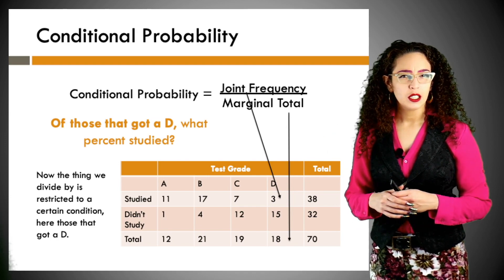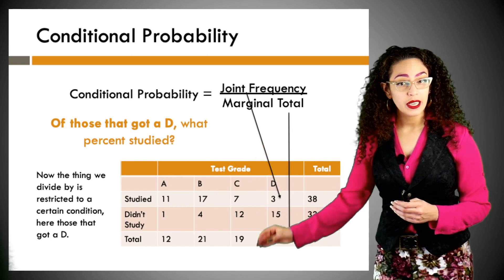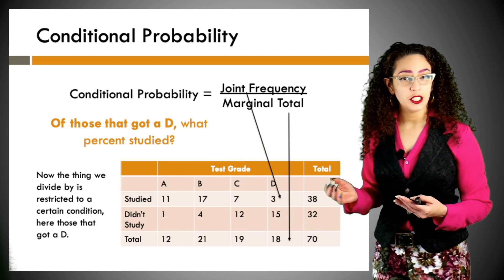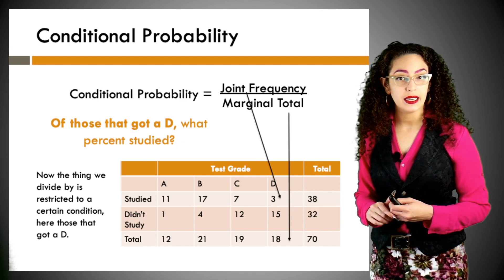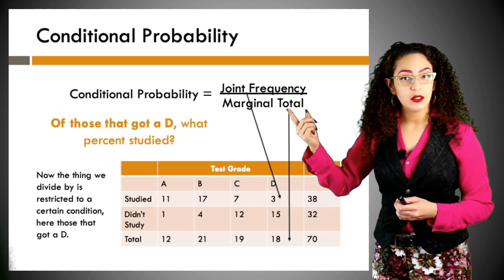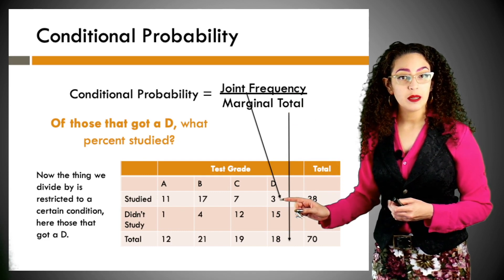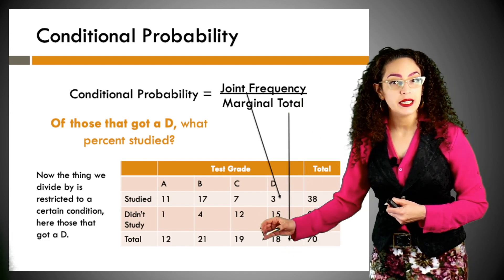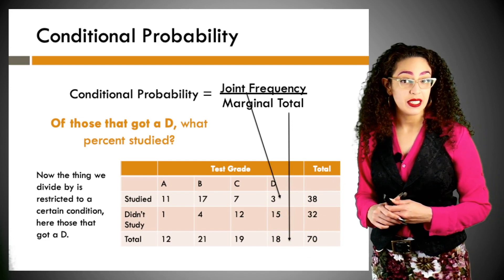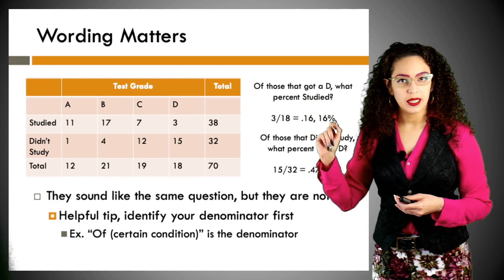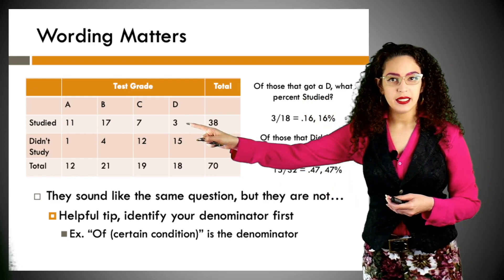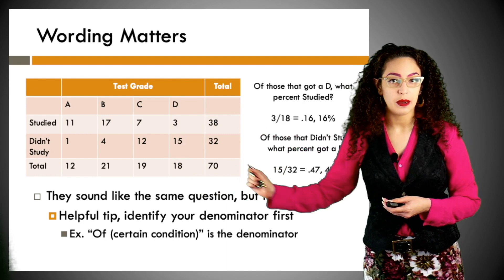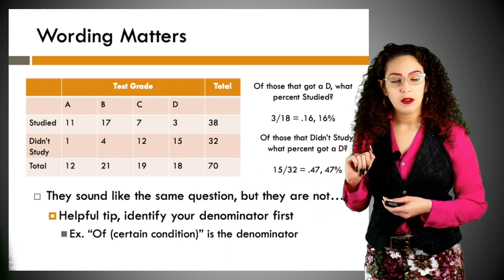Of those that got a D, what percent studied? We are only looking at those who got a D — there are 18 of them. Then we find those who got a D and studied — there were 3. It's the joint frequency over the marginal total: we divide by 18 (those who got a D), not the overall 70. So 3 divided by 18 gives 0.16 — 16 percent of those who got a D had studied.